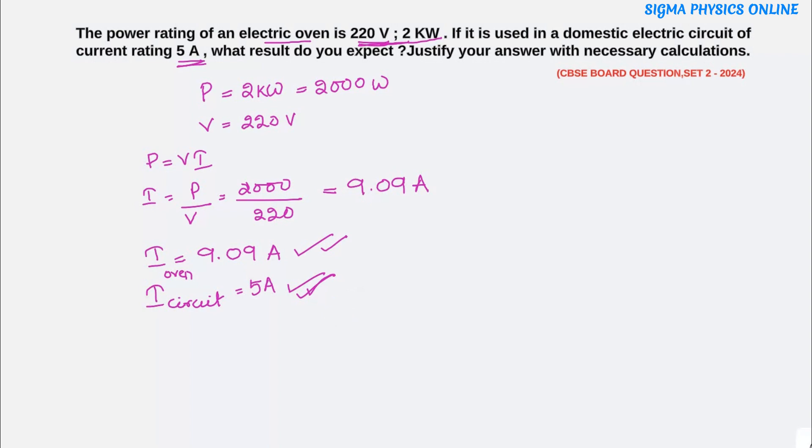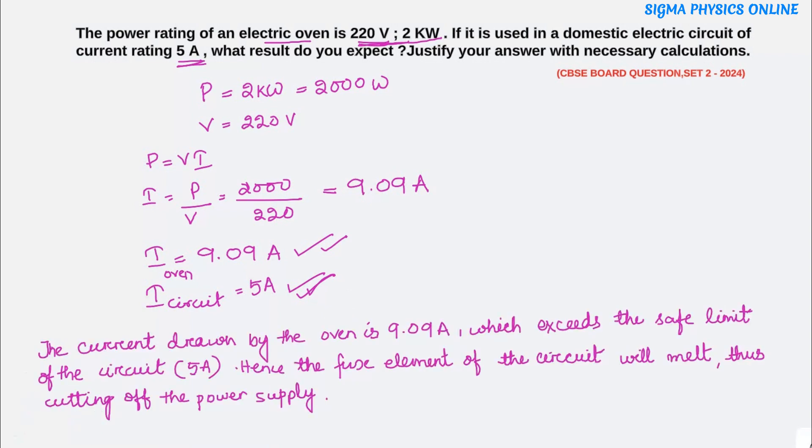So what will happen in this case? Let's write down that the current drawn by the oven is 9.09 ampere which exceeds the safe limit of the circuit that is 5 ampere. Hence, the fuse element of the circuit will melt thus cutting off the power supply.